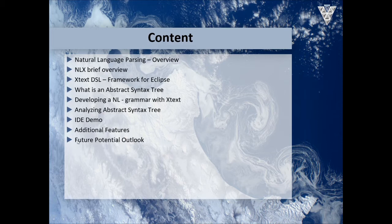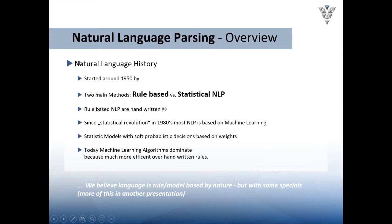Tighten your seatbelts and let's start. A little bit about the background of natural language history — it's already starting in the 1950s, at the beginning of computer science. People already started to think about natural language processing, and this is still a problem that is not really solved.